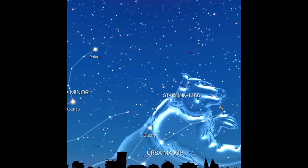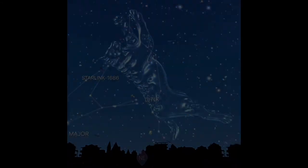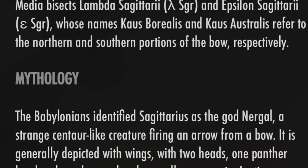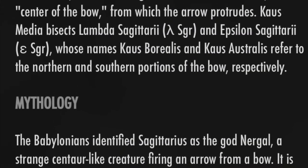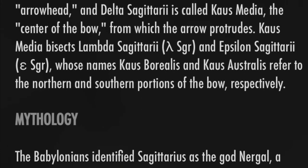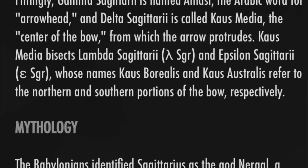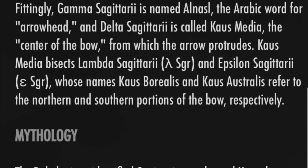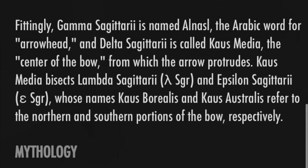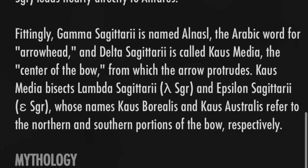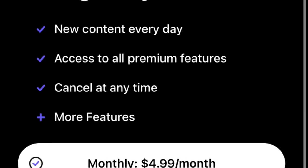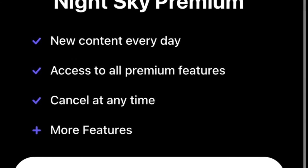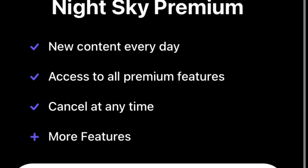If you click on any one of the constellations or stars, it gives you plenty of background information. However, if you want more information or to use the in-app activities, you have to pay monthly for a premium version of the app. I think this app has the best variety and features, but it does take a little getting used to because there's so much.